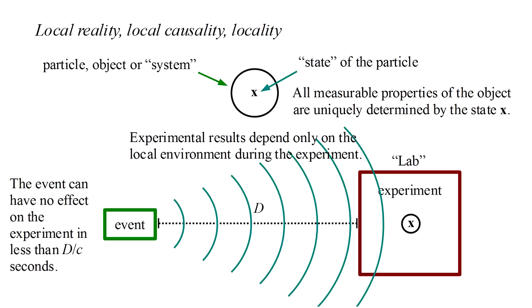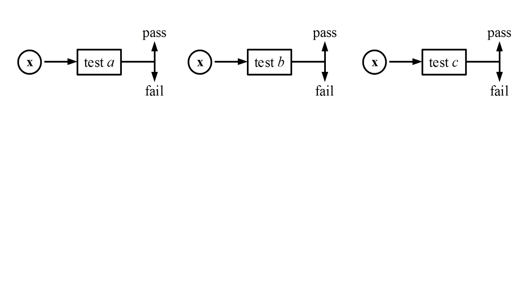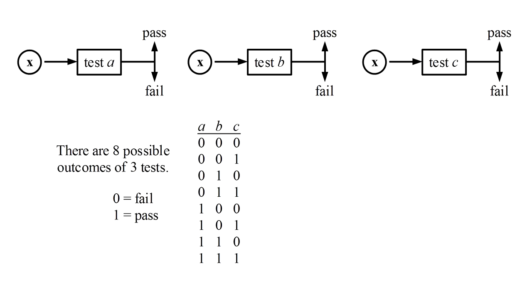Now we're ready to describe a generic experimental setup which under our assumption of locality leads to Bell's inequality. Suppose we take a particle in the state X and subject it to an experiment with two possible outcomes. We'll call this test A and label the outcomes as pass and fail. We have a second test B and a third test C. Under the assumption of locality, the results of these three tests depend only on the local experimental conditions and the state X of the particle. There are eight possible outcomes of these three tests. Using 0 and 1 to represent fail and pass, we can make a table listing all possible outcomes of the three tests, and there are only eight possibilities. Under locality, we assume that a given state X corresponds to one and only one row in this table. A particle in the same state X has to produce the same experimental results. If two particles produce results corresponding to different rows of this table, they cannot be in the same state.